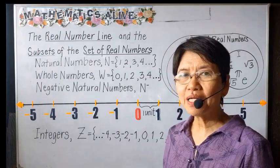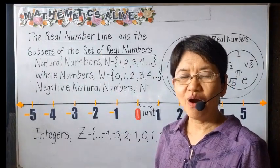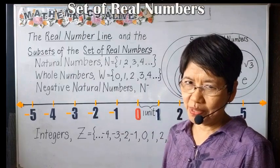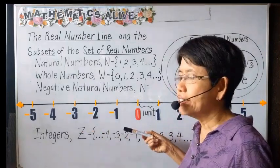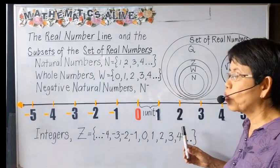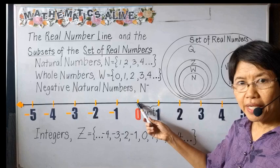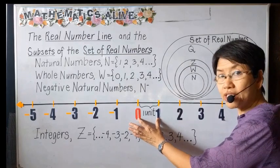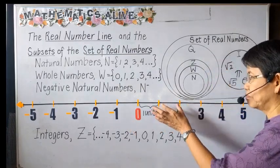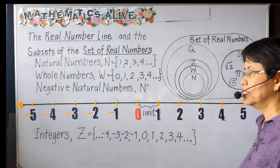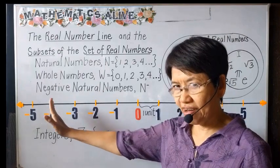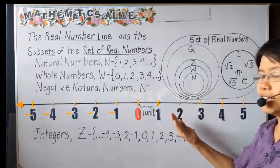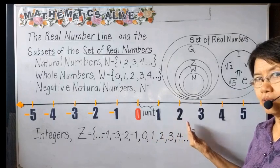Good day everyone, welcome to Mathematics Alive. Our lesson for today is the real number line and the subsets of the set of real numbers. We have here the real number line, and this line is composed of different points where point 0 is represented here. We have one unit from 0 to 1 as the basis for the division of the line, so this number line is equally divided. We have positive numbers to the right in increasing order: 0, 1, 2, 3, 4, 5,